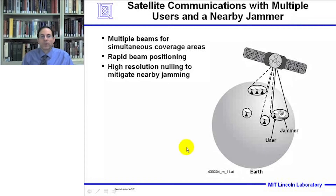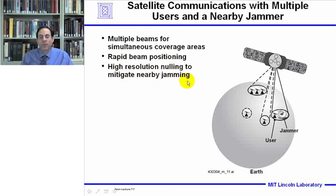Here's an example of a satellite communication system with multiple users and a jammer close to the user. We want to communicate with the user and null out the jammer. For a satellite system, we'd have multiple beams for simultaneous coverage areas, rapid beam positioning, and high-resolution nulling to mitigate nearby jamming.